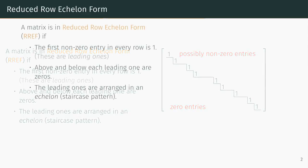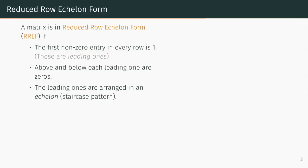Let's look at some examples and non-examples of matrices in reduced row echelon form. In the matrix to the right, the first non-zero entry in every row is a 1. Above and below each of those ones are zeros, and the leading ones are arranged in an echelon pattern. So it is in reduced row echelon form.